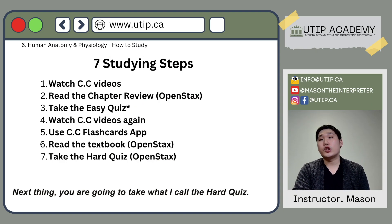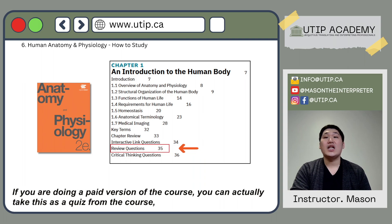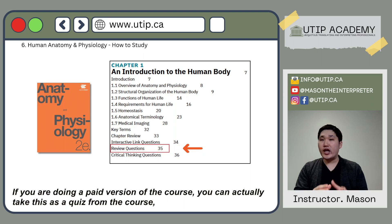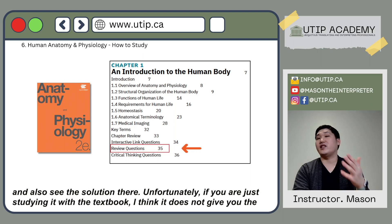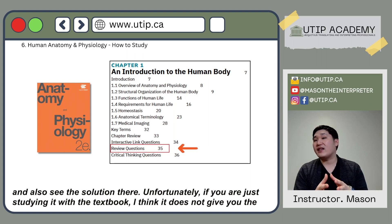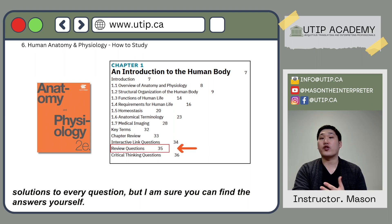The next step is to take what I call the hard quiz. This is a set of questions from the OpenStax textbook. If you are doing the paid version of the course, you can take this as a quiz and see the solutions there. Unfortunately, if you are just studying with the textbook, it may not give you solutions to every question, but you can find the answers yourself.